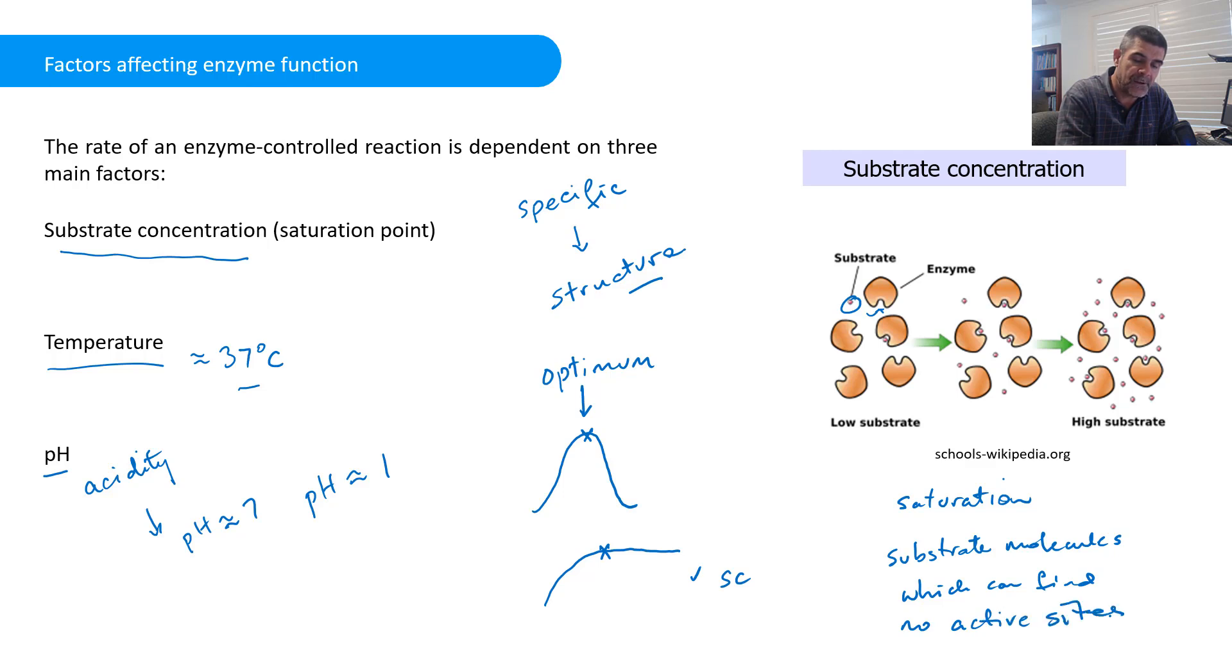At the saturation point, we have substrate molecules which can find no active sites, and as a result they can't bind. There is a point where the rate of reaction will increase up to a certain point and then level off. It doesn't matter how much more substrate you add after that point - you've reached the optimum level. There's no more active sites available for the extra substrate.